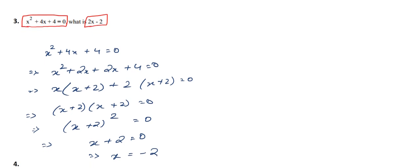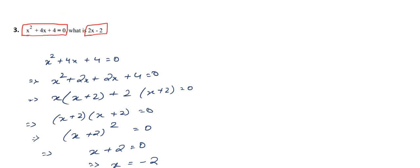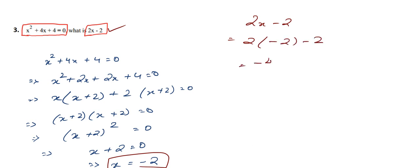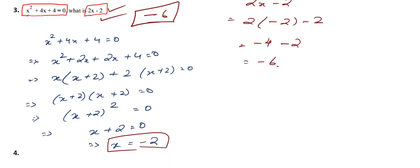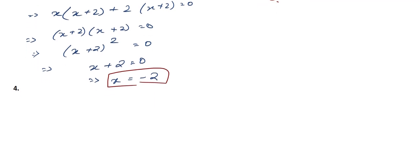Now we can find the required expression 2x minus 2. Substituting x equals minus 2: 2 times minus 2 minus 2 gives minus 4 minus 2, which equals minus 6. So the answer to this question is minus 6. I will end this video here. You will find solutions to a few more numericals based on the same topic in our further videos.